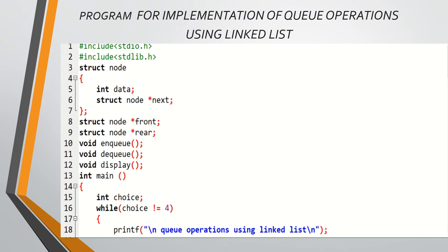Here is the program for implementation of queue operations using linked list. These two are the header files. 'struct node' contains two values: one is data (int) and another is the address field (struct node pointer next). The struct is used to combine multiple items into one node. One node is created successfully. 'struct node front' and 'struct node rear' are created — insertion takes place at the rear and deletion takes place at the front end.